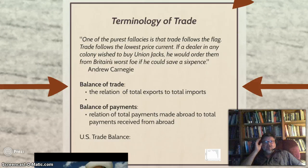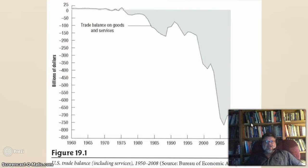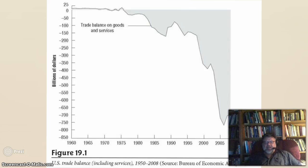The balance of trade is the relation of total exports to total imports. The balance of payments is the relation of total payments made abroad to total payments received from abroad. That brings us to the U.S. trade balance, which as you can see, since 1960, we have continually declined on our trade balance on goods and services. That means Americans buy more made abroad than we actually export abroad. We have become a consumer economy and we import far more than we export.